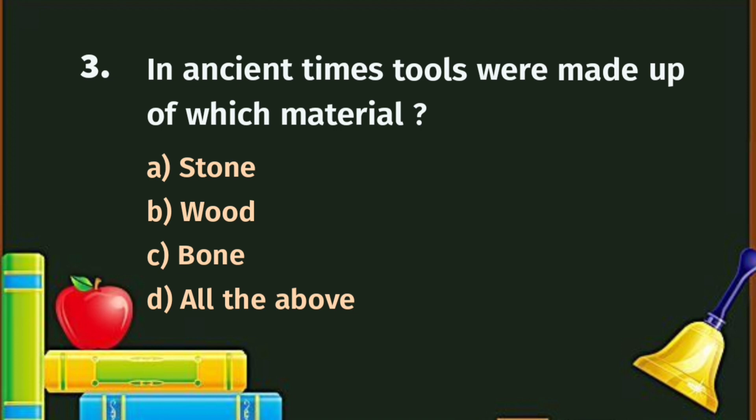Question number 3. In ancient times, tools were made up of which material? The correct answer is D - all of the above.